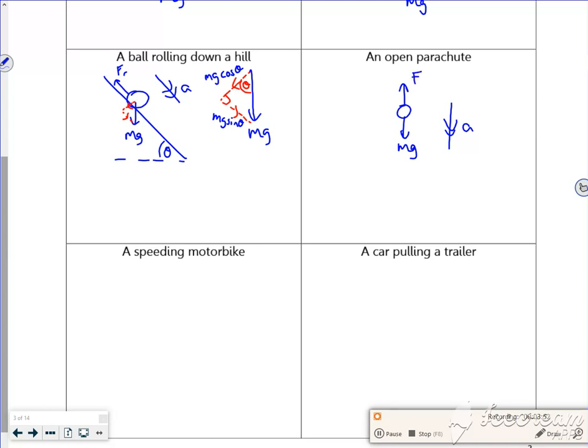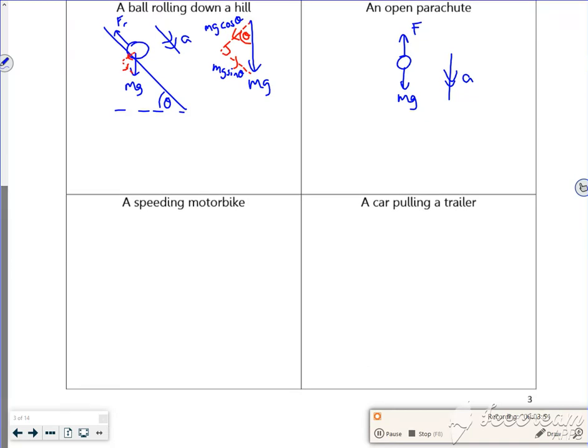Then we've got a speeding motorbike. So our speeding motorbike, same idea as our person's a block, so it's got a weight, it's got a normal reaction. Now that speeding motorbike will have some form of driving force which we might use P, and then also it's got some friction and it's traveling in that direction.